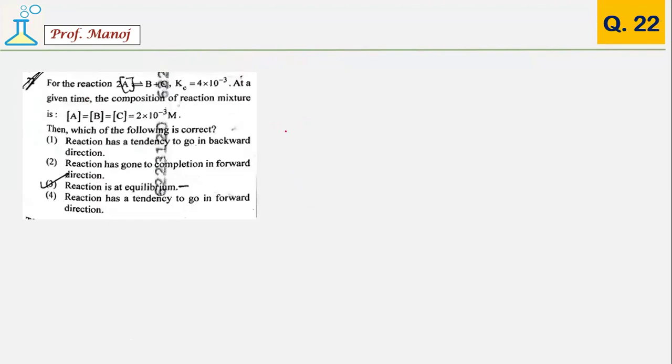This can be solved in multiple ways. The way I solved it is a shortcut. They have given the KC value approximately in the range of 10 raised to minus 3. In NCERT, they have given a diagram showing that if KC is this or less than 10 raised to minus 3, the reaction has a tendency to go backward in direction. This is one of the easiest tricks to solve in no time.